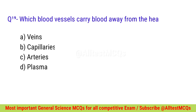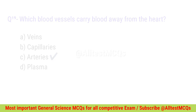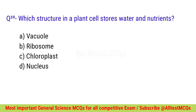Question number nineteen: Which blood vessels carry blood away from the heart? Right option is C — Arteries. Question number twenty: Which structure in a plant cell stores water and nutrients? Correct option is A — Vacuole.